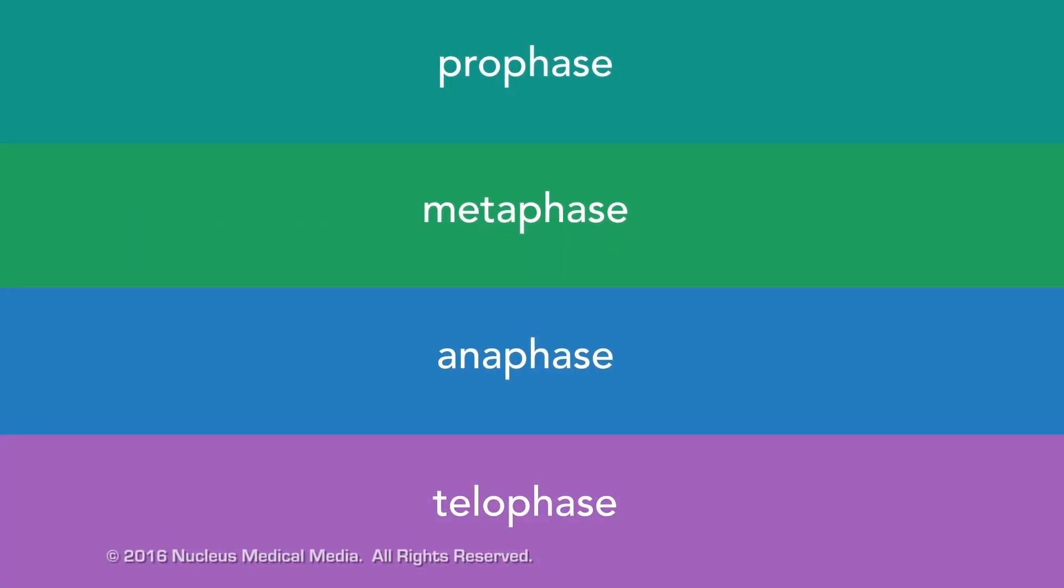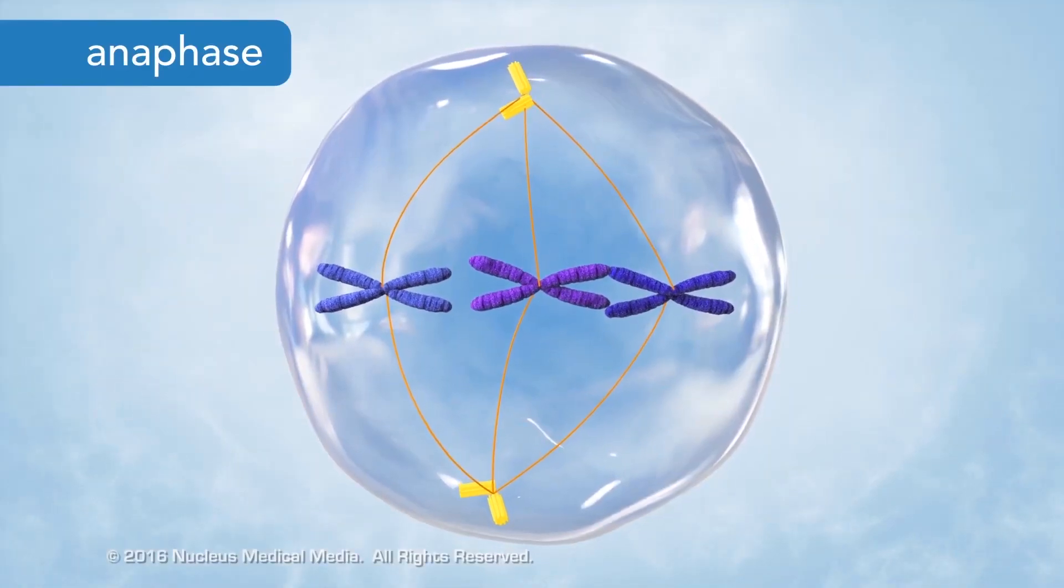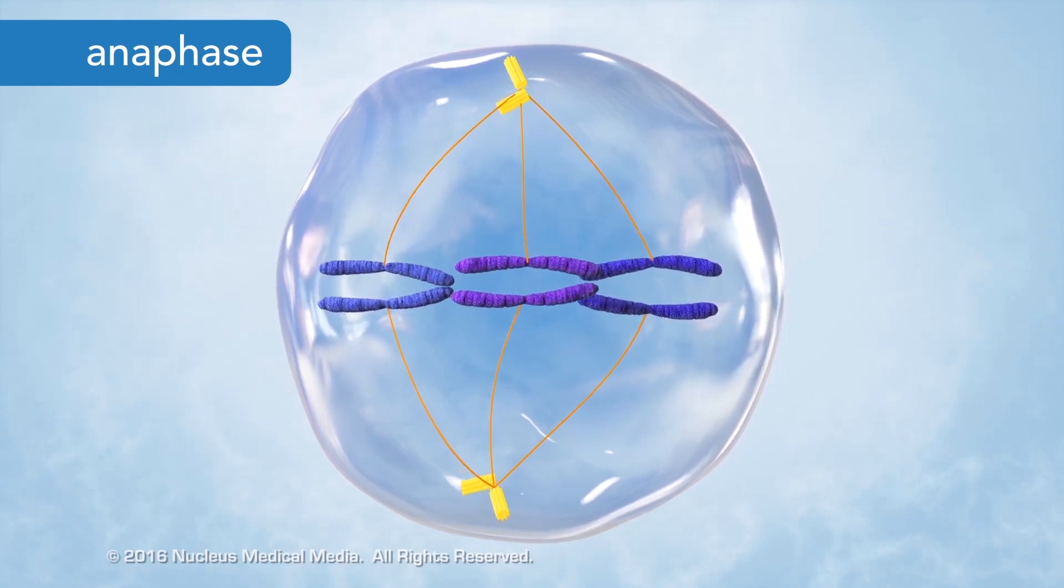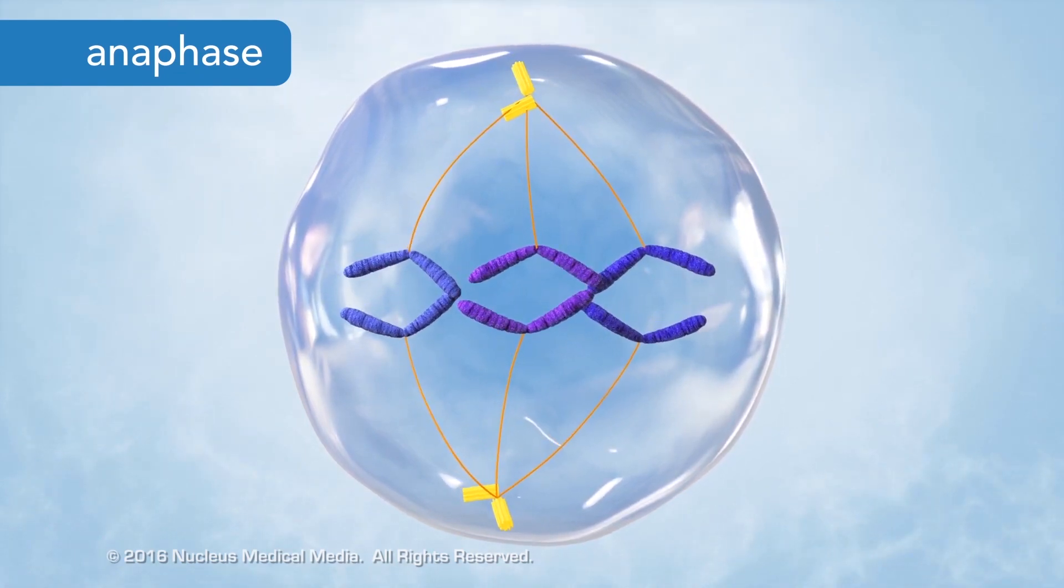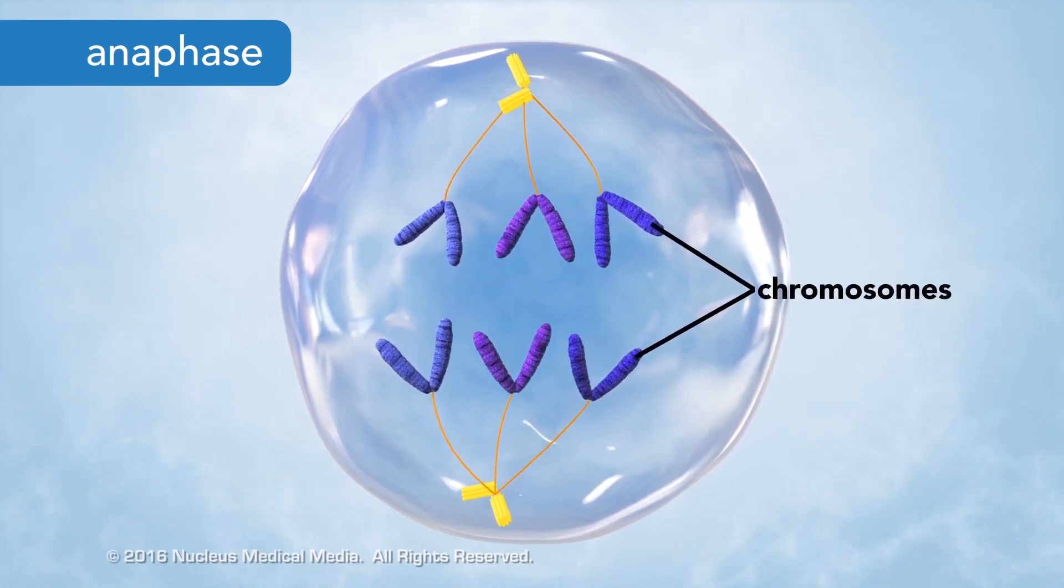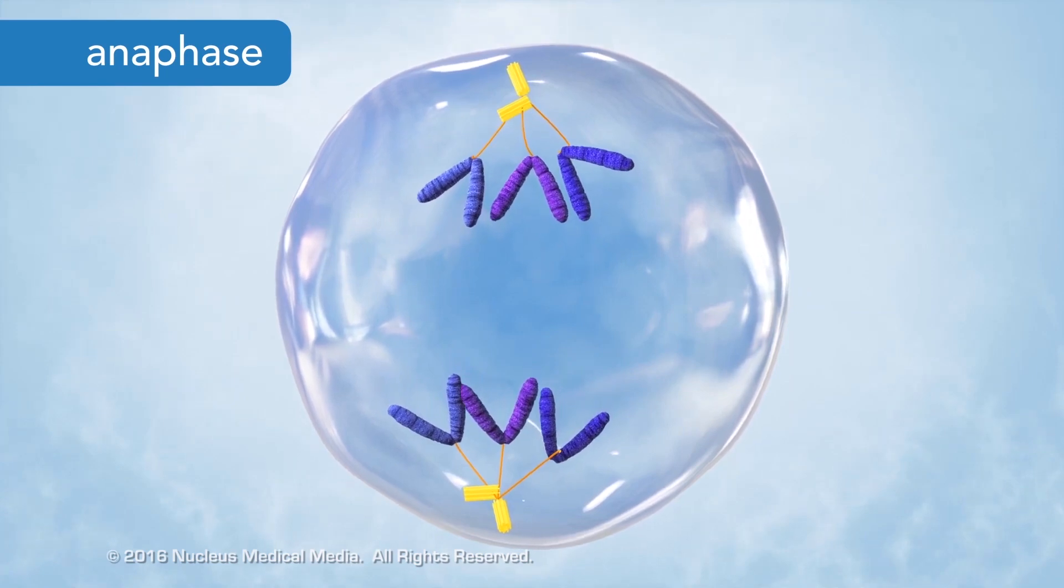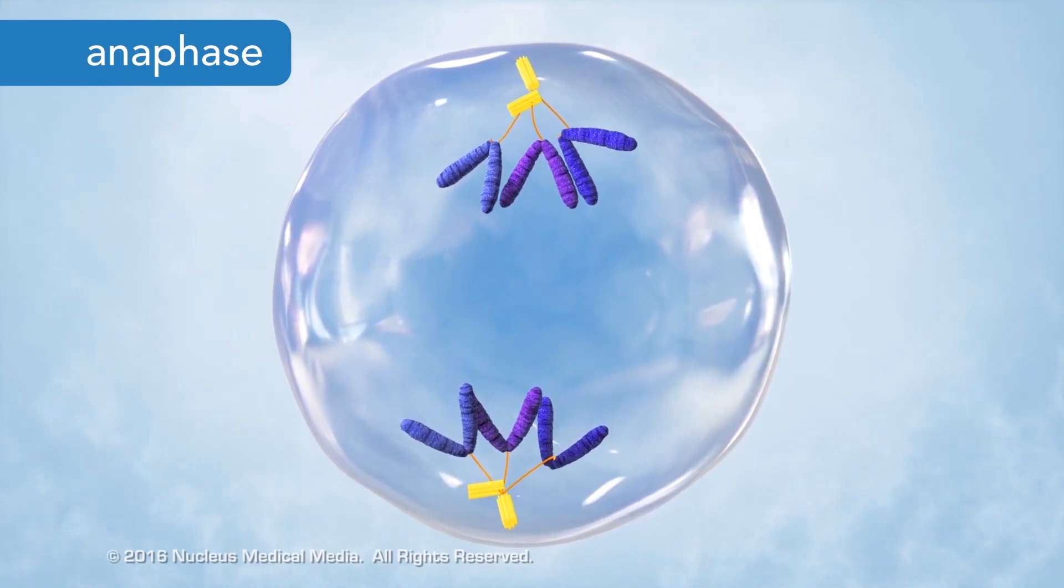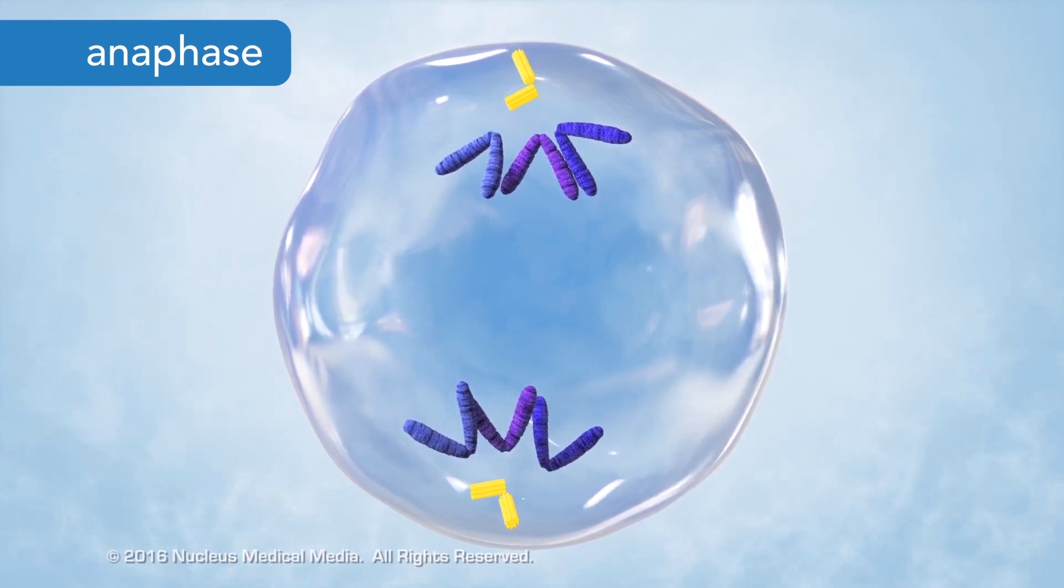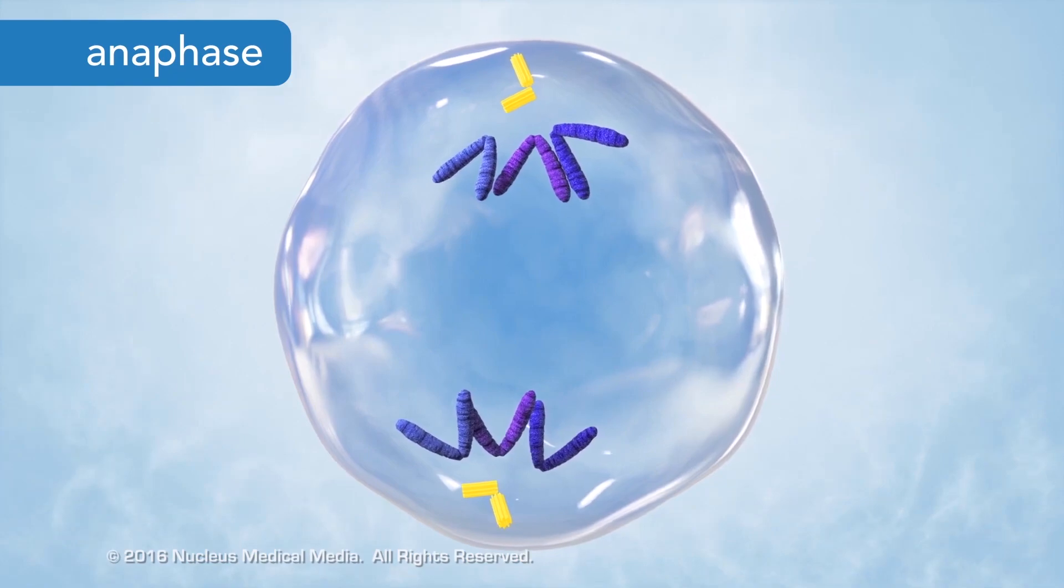Anaphase follows metaphase. During anaphase, spindle fibers separate the sister chromatids at their centromere. Once separated from each other, each chromatid is called a chromosome. The single-stranded chromosomes form a V-shape as the spindle fibers shorten and drag them through the gel-like cytoplasm. The chromosomes move to opposite poles of the cell toward their centrioles.